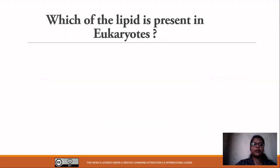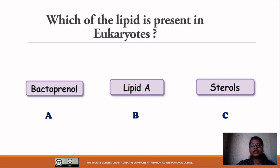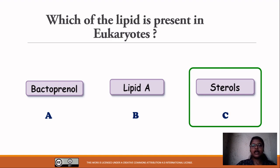Question number four: Which lipid is present in eukaryotes? Bactoprenol is involved in cell wall synthesis — specifically the synthesis of peptidoglycan — and since peptidoglycan is not present in eukaryotes, bactoprenol should not be there either. Lipid A is present in the LPS (lipopolysaccharide) layer of the bacterial cell wall, so it is also not in eukaryotes. Therefore, the correct answer is sterols — sterols are present in eukaryotes and absent in most prokaryotes.